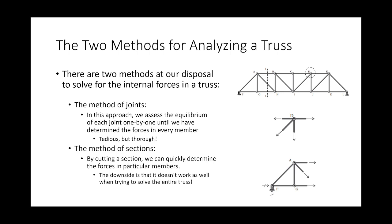The method of sections does have some advantages. When you use the method of sections, you're doing something more akin to my table example — you're breaking out the samurai sword and cutting right through a component of the truss. The benefit is that you're now dealing with a non-concurrent force system, a rigid body, where the forces don't meet at a common point. So you have a third equation at your disposal — the sum of moments — and you can solve for more unknowns. The downside is it doesn't work well when you're trying to solve the whole truss; it's best when you just need the force in one member.